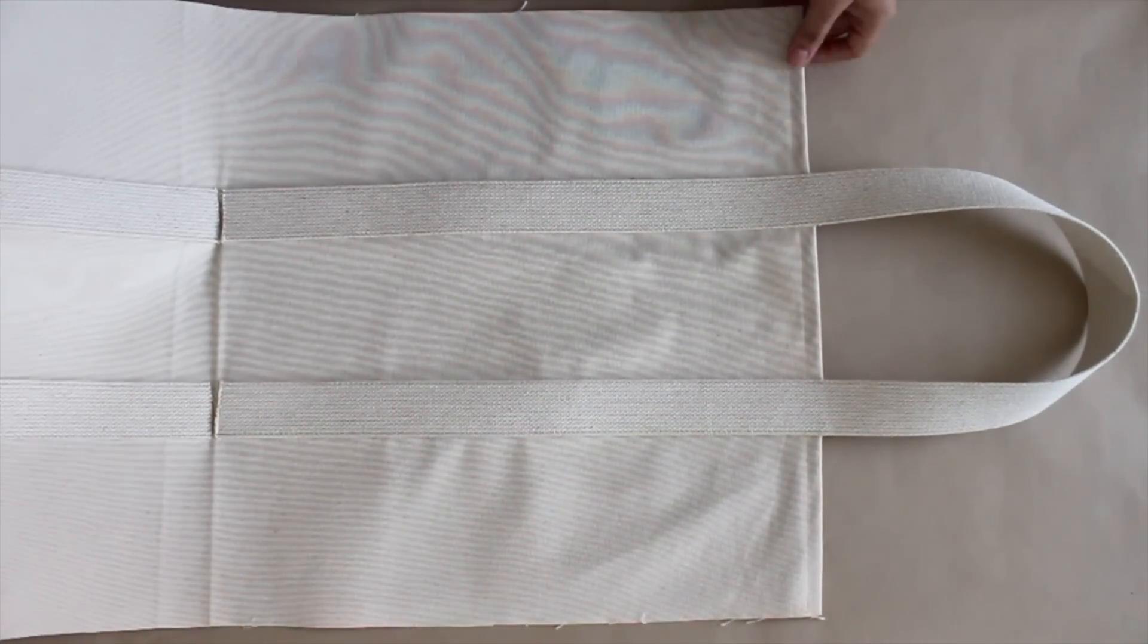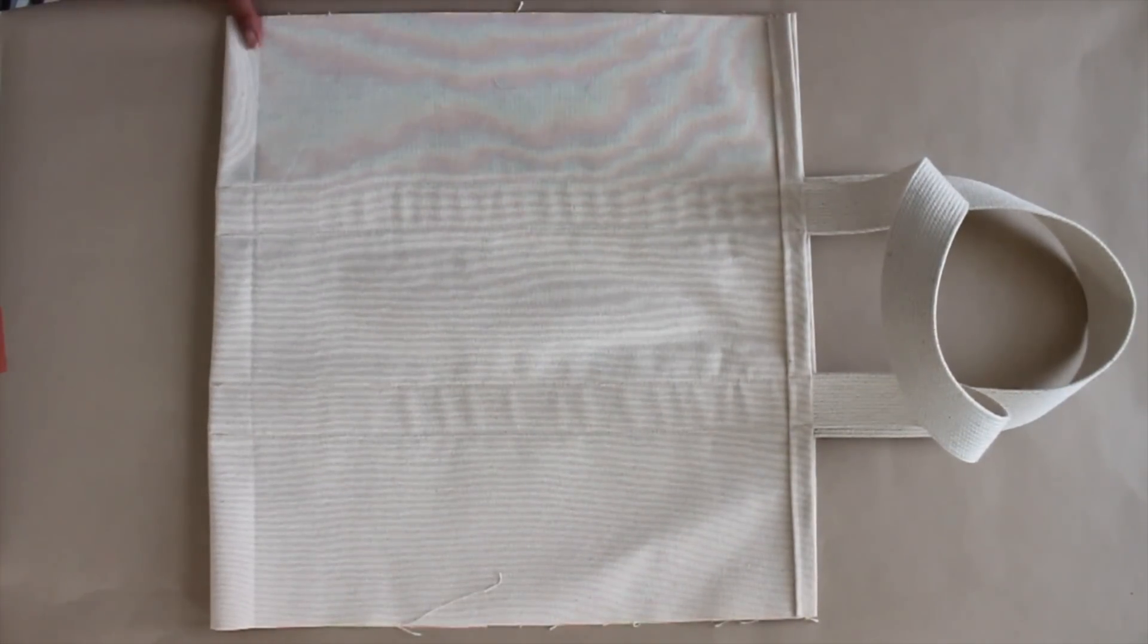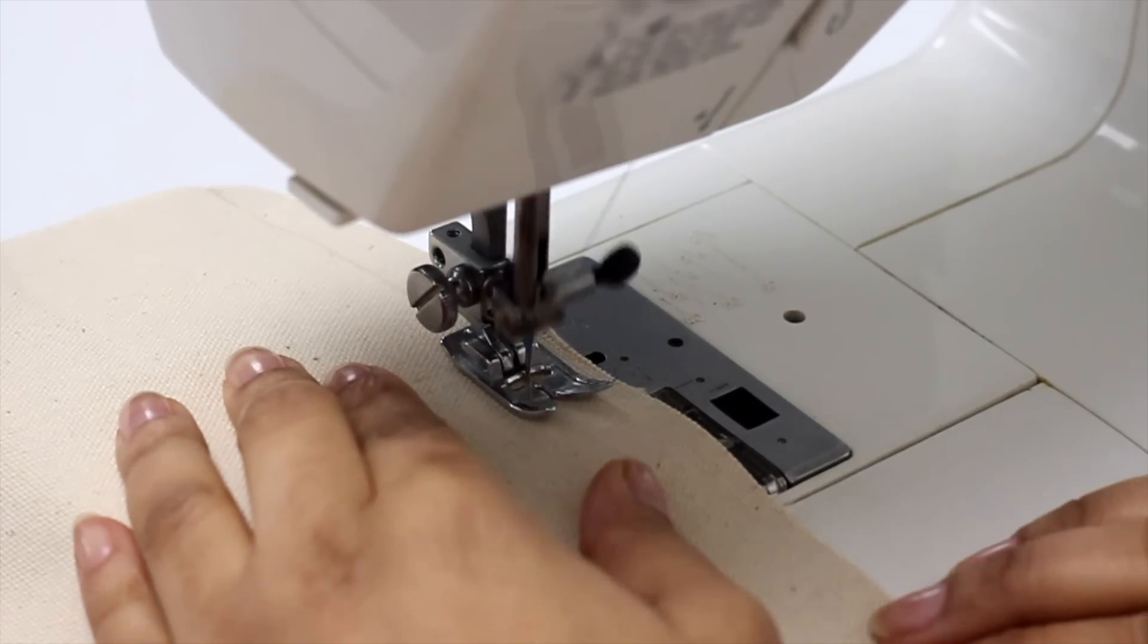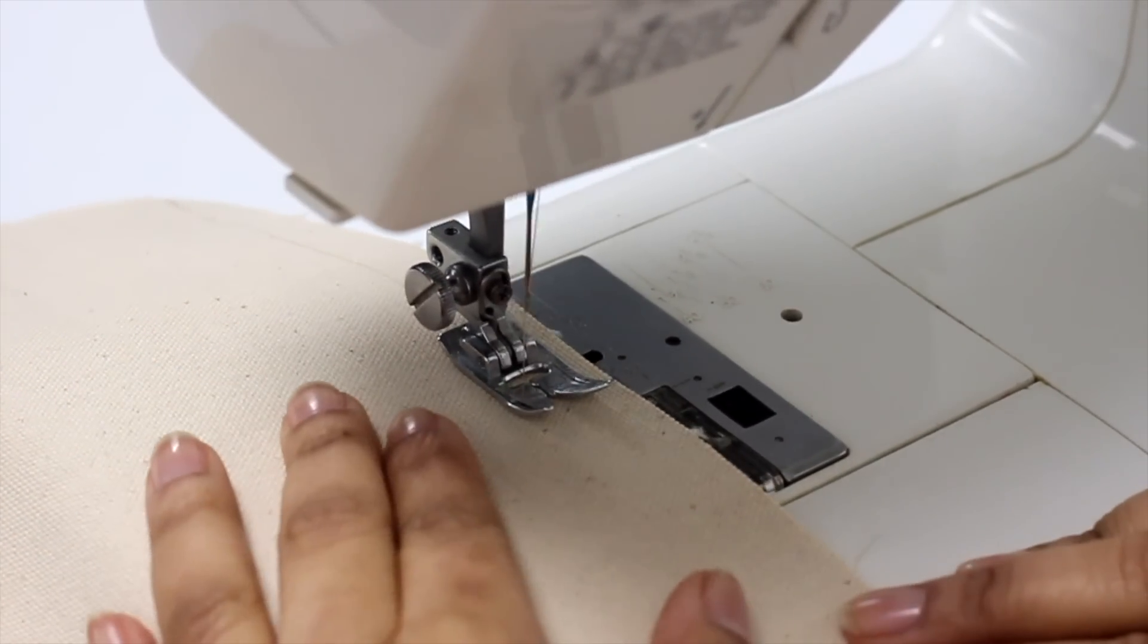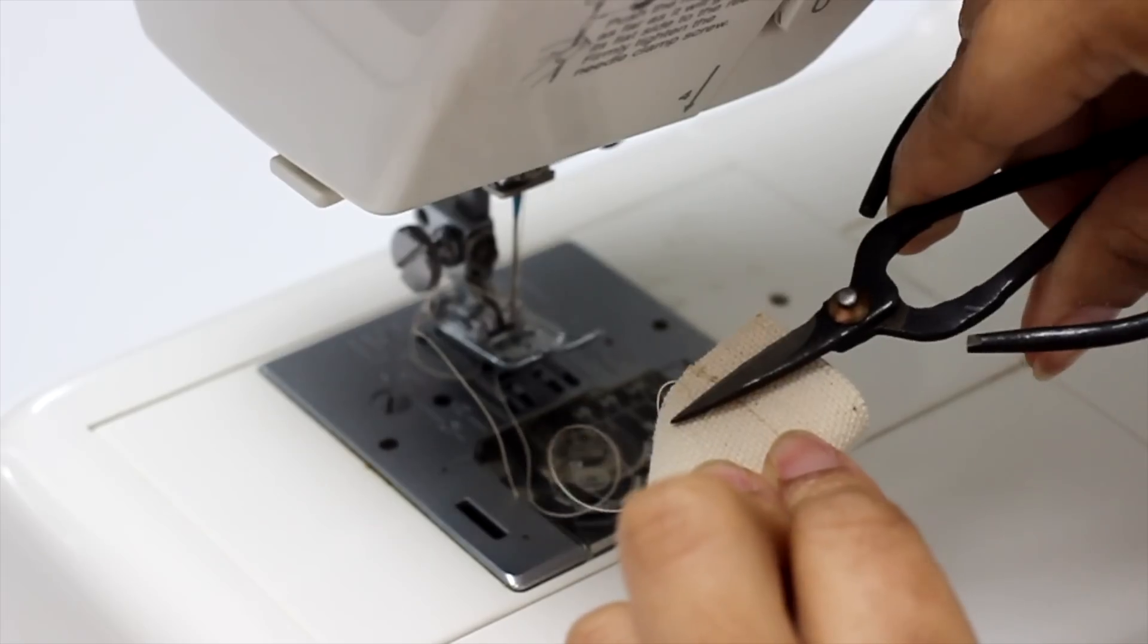So now you're going to put your right sides together and sew up your side seam. And you know what, you could call that done, but I'm going to go an extra step and create a bottom to my bag, which will also create side gussets. You'll see what I mean in a minute.